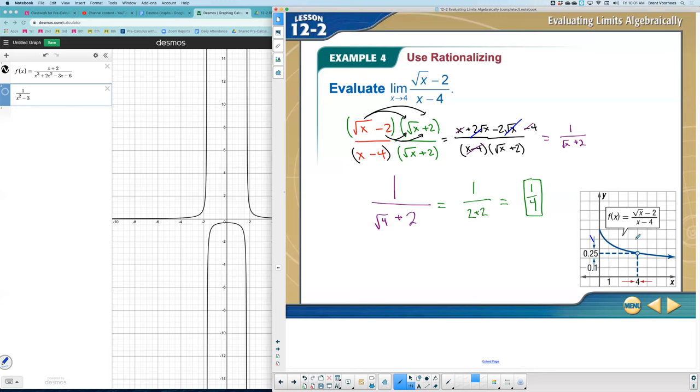When I look at this graph, as I close in on the x value of four from the left side and as x approaches four from the right, the y value we're approaching is according to the graph 0.25, which is one fourth.